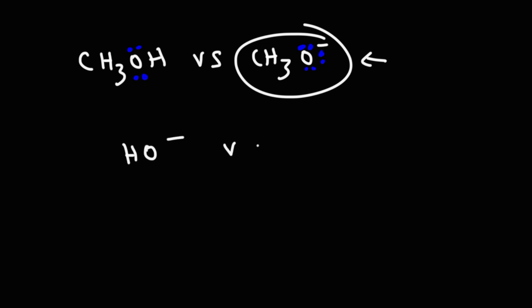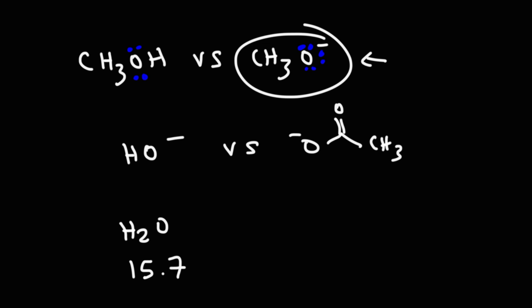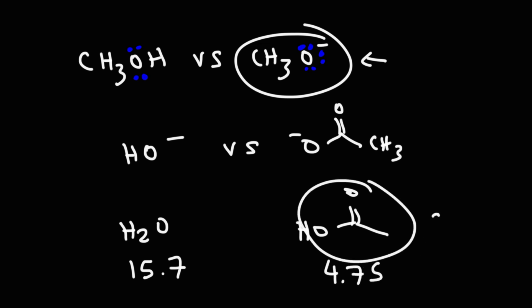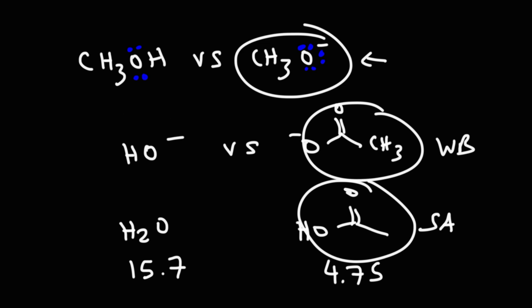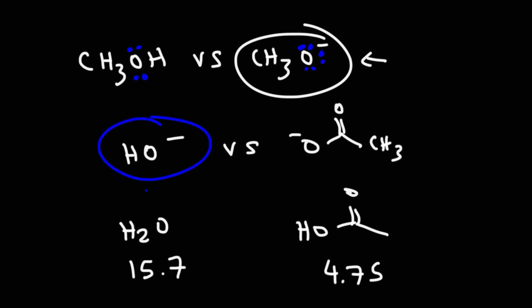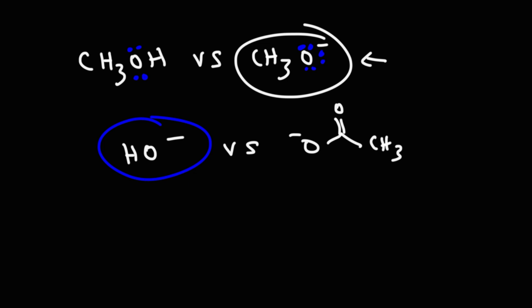Now what if we were to compare hydroxide with the acetate ion — which one is the better nucleophile? In both cases we're dealing with an oxygen with a negative charge, so nucleophilic strength will mirror base strength. The conjugate acid of hydroxide is water, which has a pKa of 15.7. Acetic acid has a pKa of around 4.75, making it the stronger acid and therefore the weaker base. Therefore, hydroxide is the stronger base, which means it's going to be the better nucleophile. So the answer is hydroxide — it's the stronger base and also the stronger nucleophile.